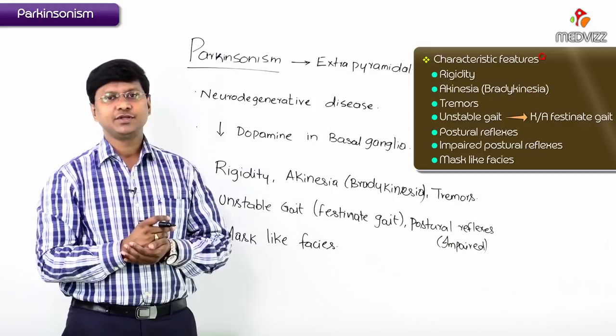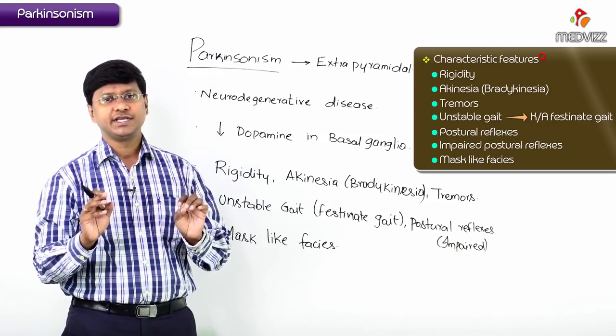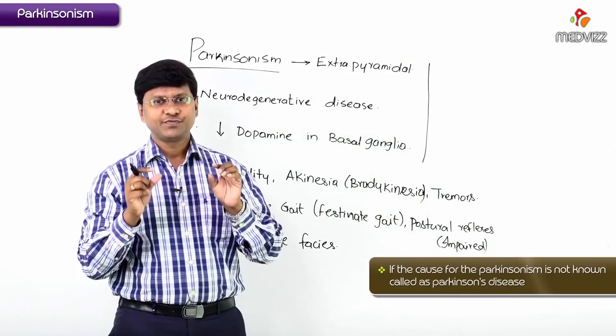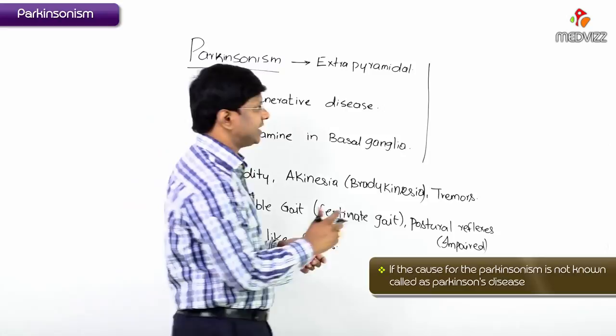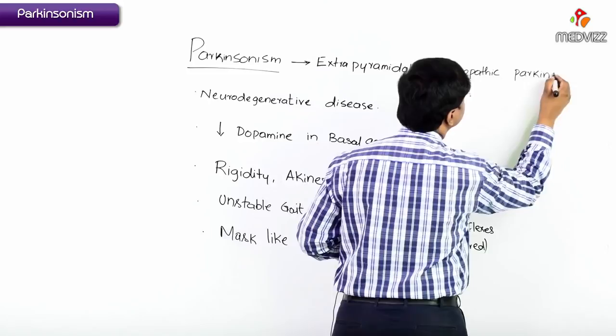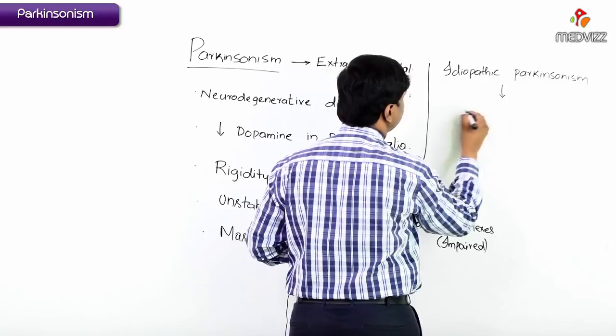There are many etiologies for Parkinsonism, but the pathophysiology is a decrease in dopamine within the basal ganglia. If the cause of Parkinsonism is not known, that is called Parkinson's disease — idiopathic Parkinsonism.